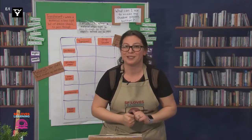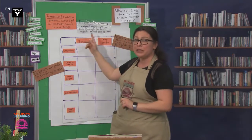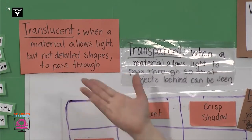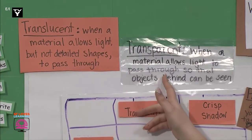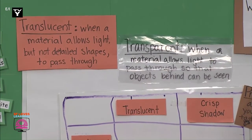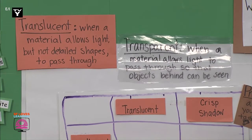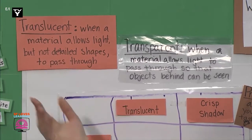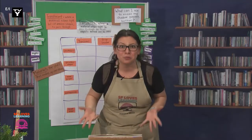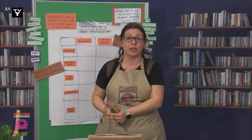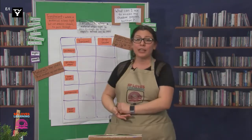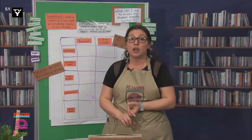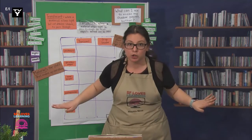Wonderful job reading those with me. Now, which of these two properties would be best for our shadow box? Do we only want light to pass through, like in a translucent material, or do we want to be able to see every single detail, like in a transparent material? That's right. A property we want our materials to have is to be translucent. We also want to make sure that our material gives a crisp shadow. Otherwise it won't be seen. I think we're ready to get started. I want a material that's going to give a crisp shadow and is only translucent, not transparent.